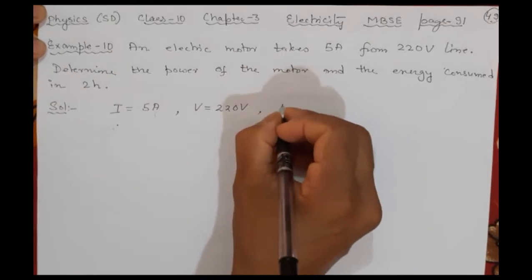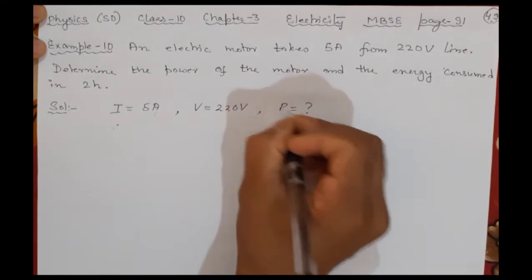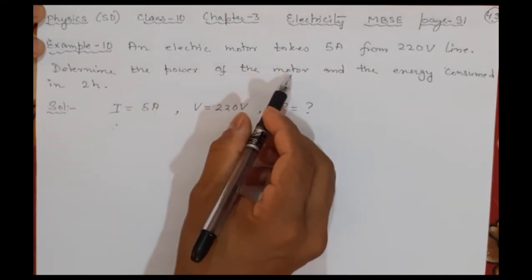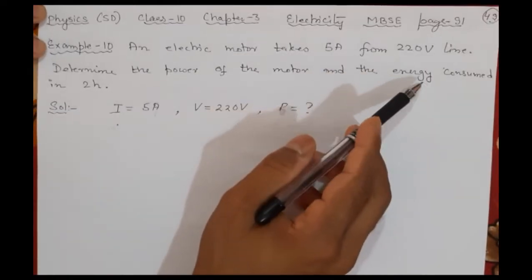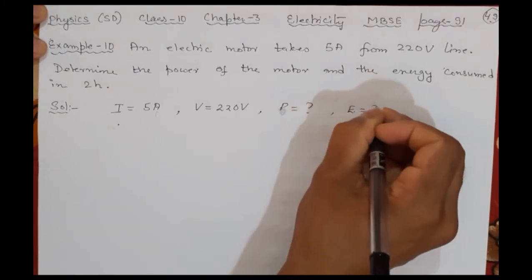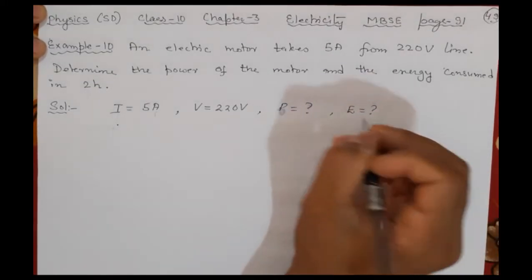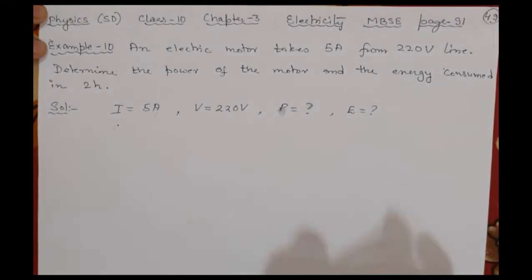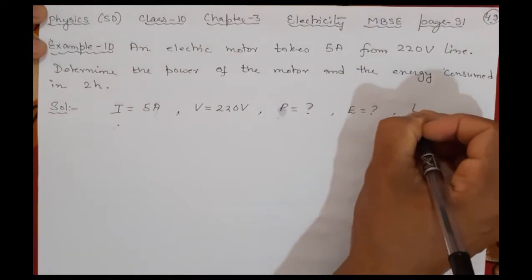Determine the power - that means you have to find the power P. This is your question for the motor. And the energy consumed in two hours - you have to also find the energy. After finding the power, you can find the energy also. You are given the time.